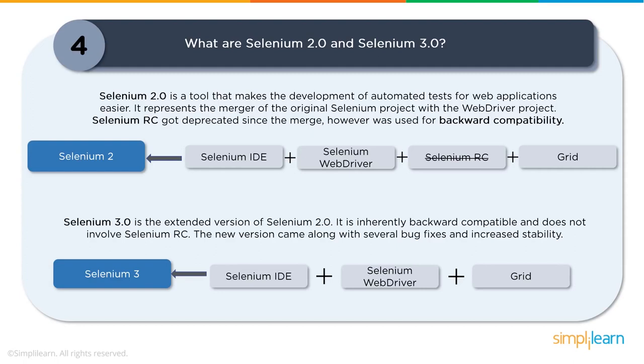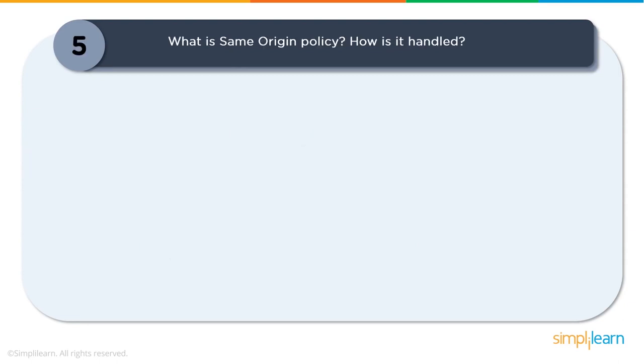In Selenium 2.0, RC was already on a path of deprecation. Selenium 3.0 eliminated RC completely, with WebDriver replacing it entirely. The components of 3.0 are IDE, WebDriver, and Grid. With a full-fledged WebDriver, Selenium 3.0 became the most powerful tool for web application automation.